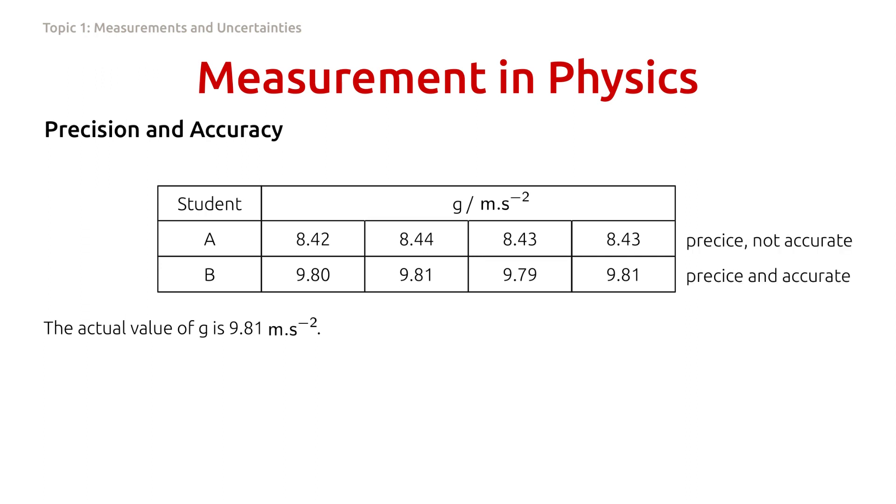The data from student A is considered to be precise, but not accurate. Student B, on the other hand, has data that is both precise and accurate. Can you explain why?